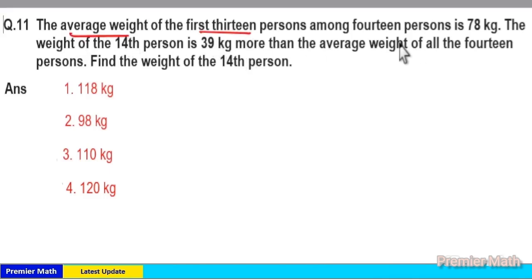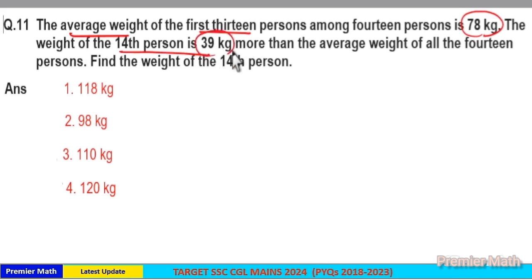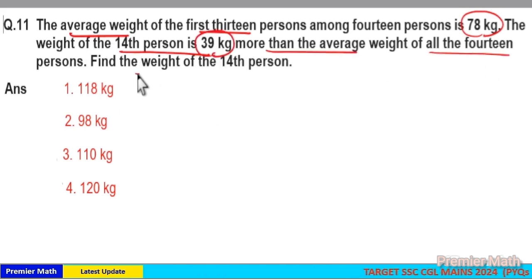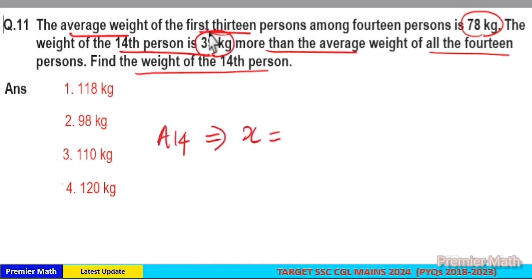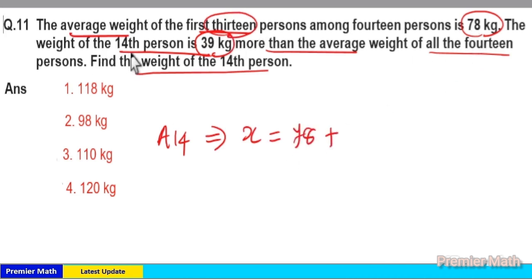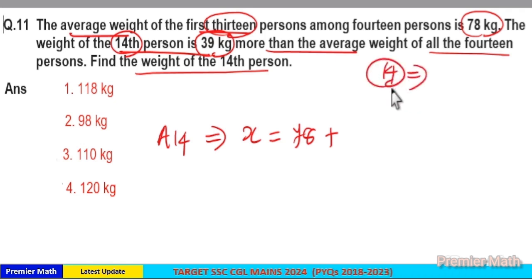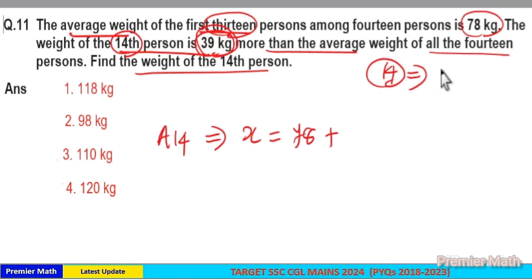The average weight of the first 13 persons among 14 persons is 78 kilograms. The weight of the 14th person is 39 kilograms more than the average weight of all 14 persons. Find the weight of the 14th person. Consider the average of 14 people as x. The average of the first 13 people is 78 kilograms. The 14th person's weight is given as x plus 39.